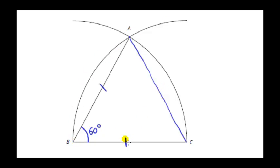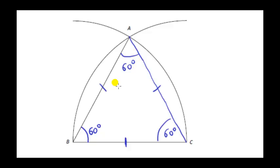So this line has the same length as this line — this equals this, and this in turn equals this. So the three sides are the same, meaning we have an equilateral triangle. The three angles are also the same, and since the three angles add up to 180, three equal angles that add up to 180 means each angle is 60 degrees.